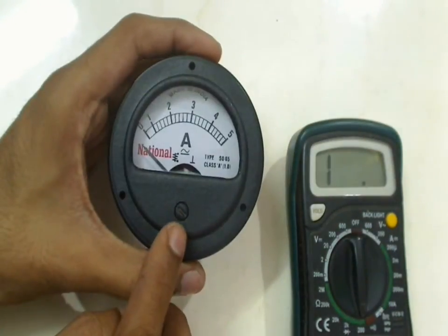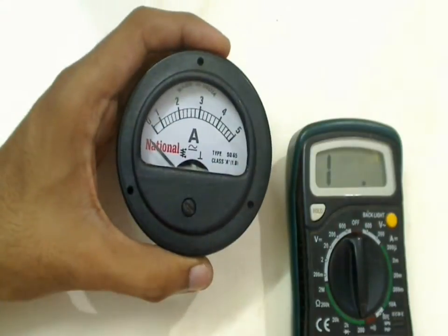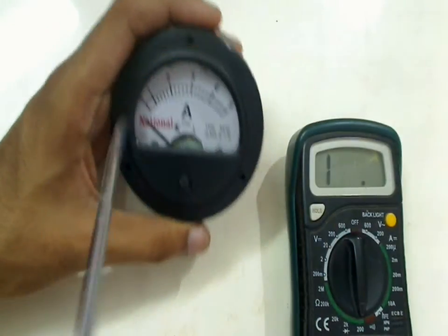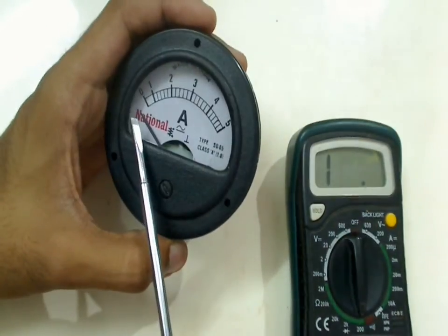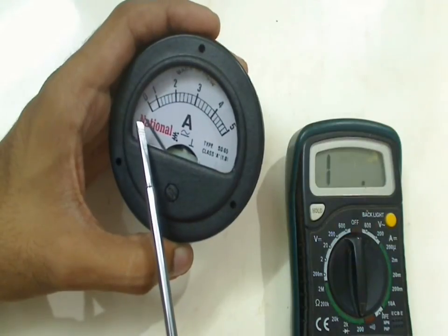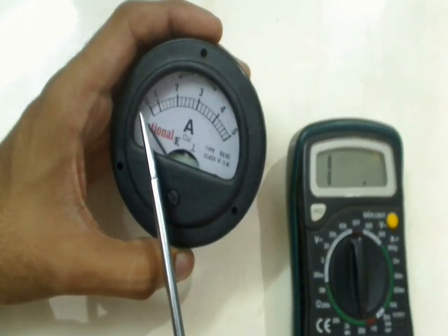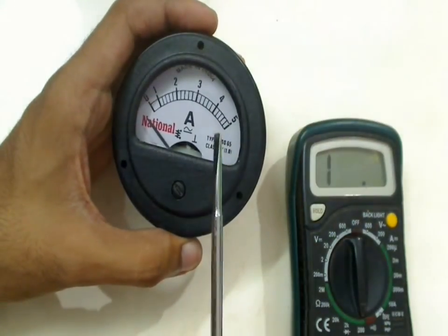As you can see there is a small screw given here which is used to change the precision of this ammeter. You can see that the ammeter is not pointing at 0 right now but it should actually point at 0 in the ideal state.